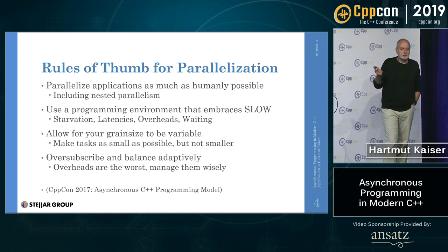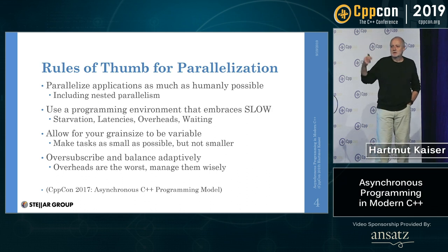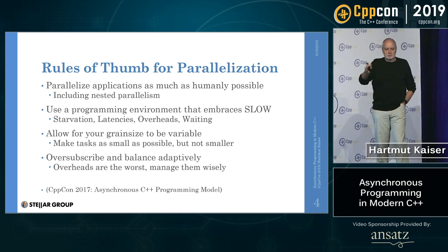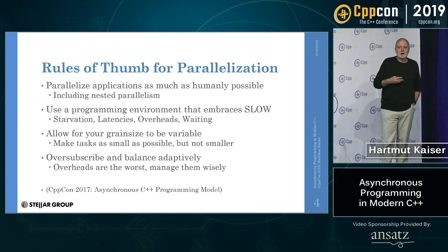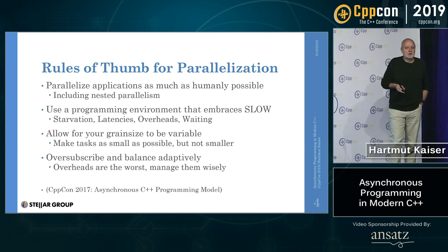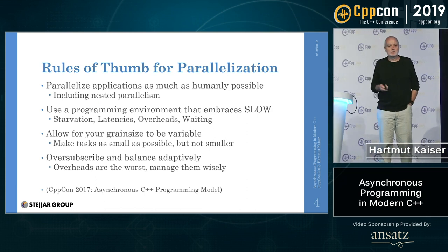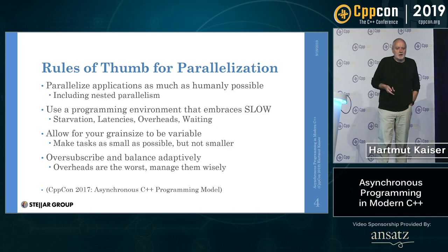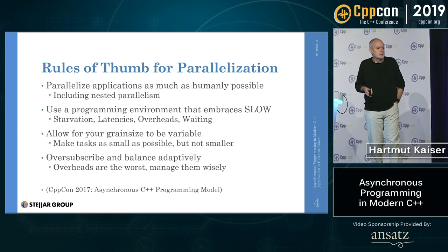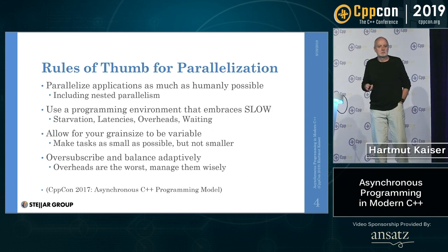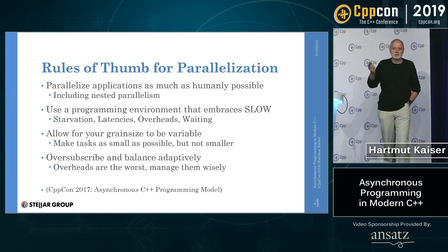You want to use a programming environment that embraces the SLOW factors. SLOW stands for: Starvation — not enough parallelism; Latencies — you have to wait for something, a time distance delay to some service, memory access, networking, essentially everything limited by the speed of light; Overheads — code that needs to execute to manage parallelism; and Waiting for contention resolution — contention is having too much parallelism, where memory bandwidth is insufficient to feed all vector units in your CPU.